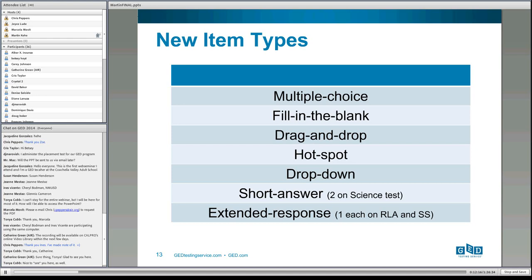We have new item types on the exam. While multiple choice items are good and still make up over 50% of items, they aren't the best for measuring all content aligned with the Common Core. We also have fill-in-the-blank, drag and drop, hot spot, drop down, and two categories of constructed response items: short answer and extended response. All these item types are described in detail in our Assessment Guide for Educators on our website, where you can also find examples.